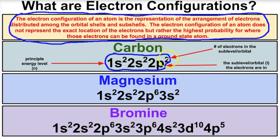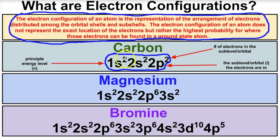The little exponents in an electron configuration represent the number of electrons in each individual sub-level or orbital. For carbon: the first two electrons are in the s sub-level of the first energy level; the next two are in the s sub-level of the second energy level; and the final two are in the p sub-level of the second energy level. Two plus two plus two equals six electrons — all accounted for.